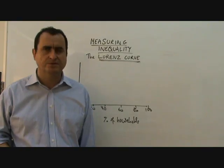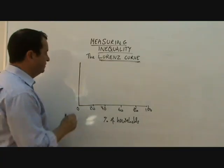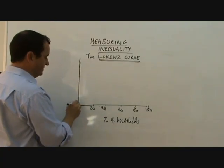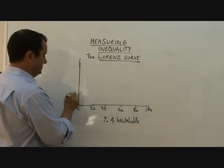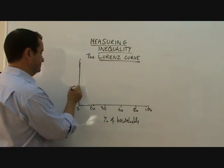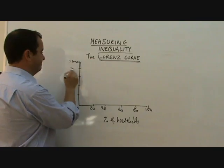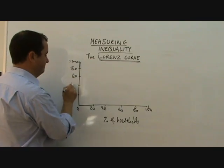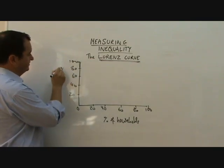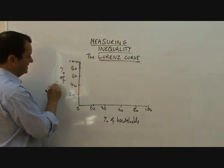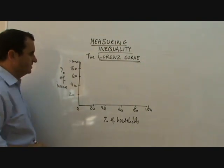You can do it with wealth but we're doing it with income. On the vertical axis we also have split into percentages, let's say 20, 40, 60, 80, 100. Again it's very rough. But this is percent of income.